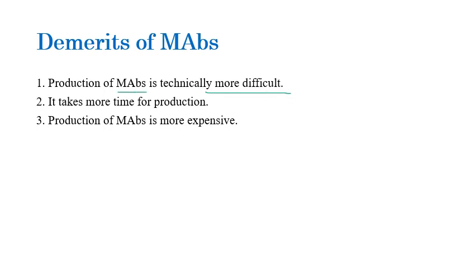The demerits of monoclonal antibodies include that their production is technically more difficult and time-consuming, sometimes taking two to three months or more to harvest. The production of monoclonal antibodies is also a very expensive process. This concludes the topic of types of antisera, monoclonal antibodies, and polyclonal antibodies.